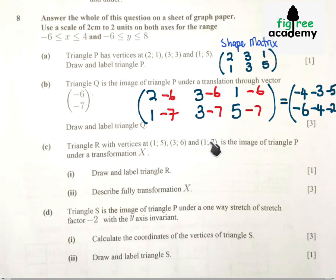I suspect that there is an error, this is supposed to be negative 1, but anyway we are going to work with 1 on the question paper. Then I will highlight the answer of the original marking scheme. But it seems there was an error here. So we are required to draw and label triangle R.